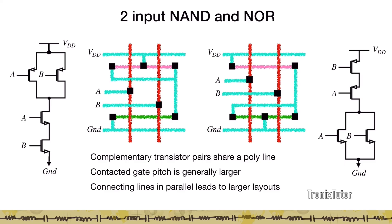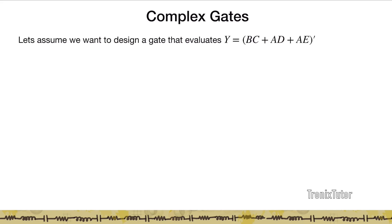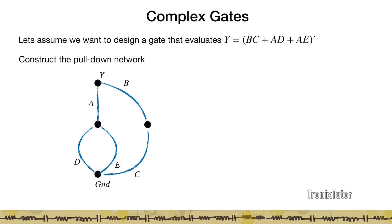Now let's design a complex gate where Y equals (BC + AD + AE) complement. In CMOS it's helpful to think of the expression as a complement, so you can quickly design the pull-down and pull-up stacks. For the pull-down stack, I'll use a graph representation: Y is the output node, a line connecting nodes indicates a transistor. BC is in series, then A is common between AD and AE paths.